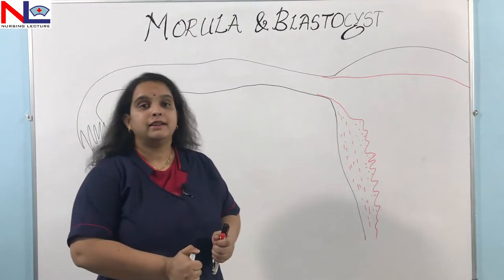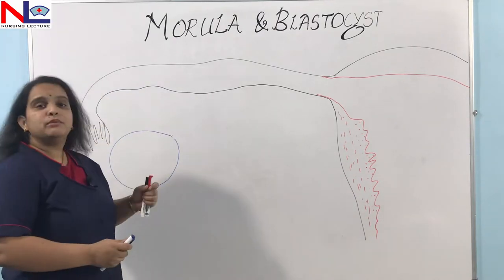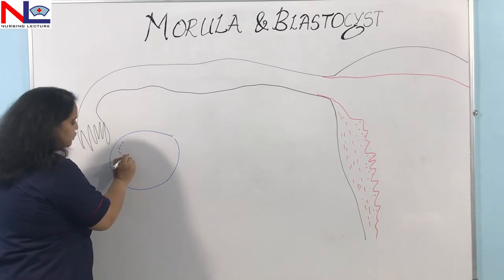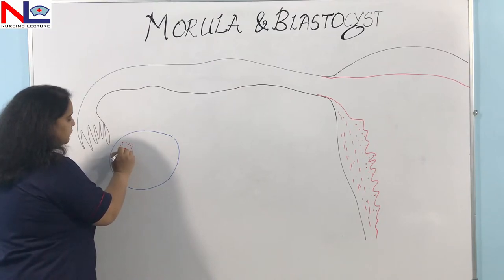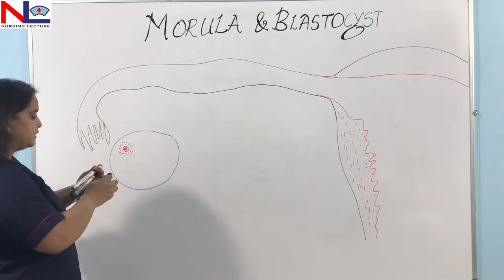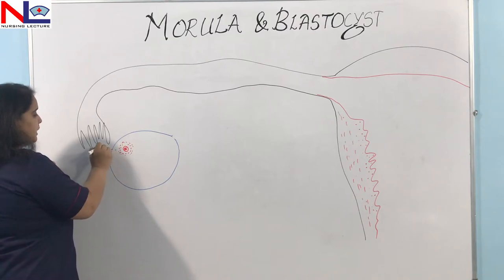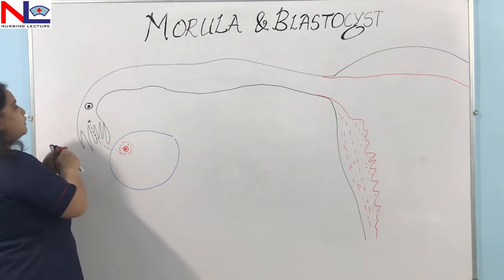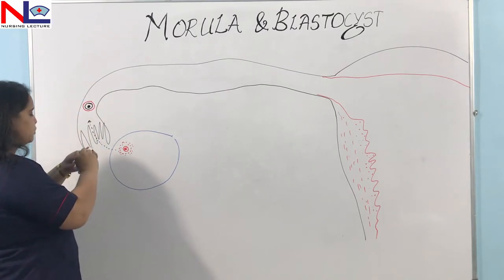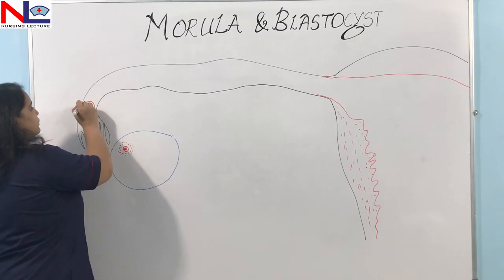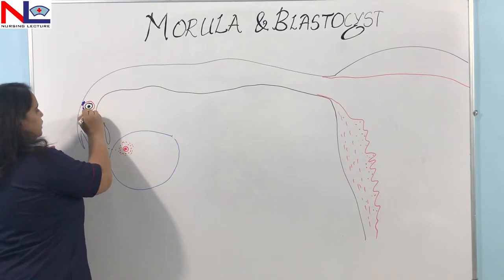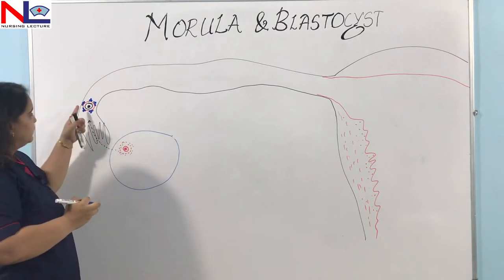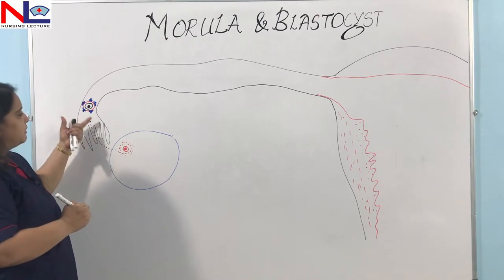If you remember, or you can see in my previous video, we studied how ovulation takes place. Ovulation happens on day 14 — the mid of the cycle — in which from the ovary there is a mature Graafian follicle or tertiary follicle, and in the tertiary follicle there is a secondary oocyte which is released on day 14. This secondary oocyte is picked up by the fimbriae end of the fallopian tube, and it is covered by a layer of zona pellucida and also surrounded by granulosa cells called the corona radiata.